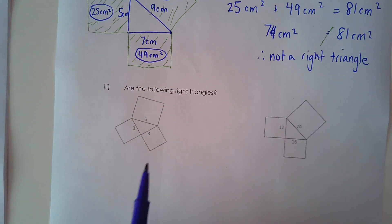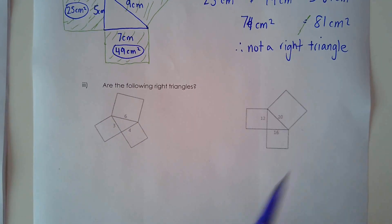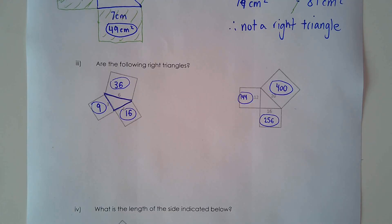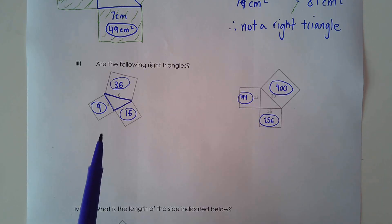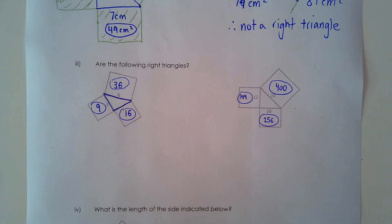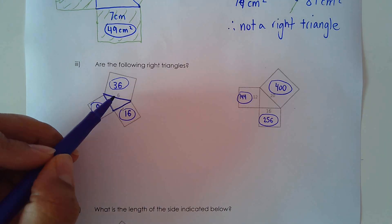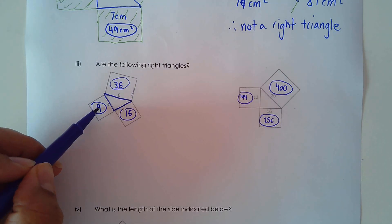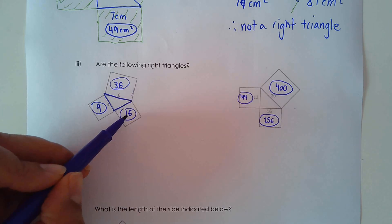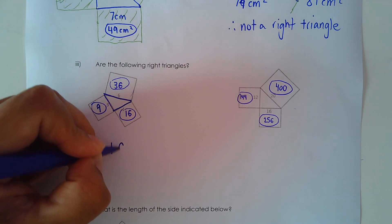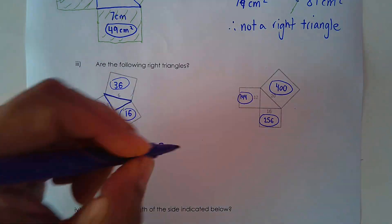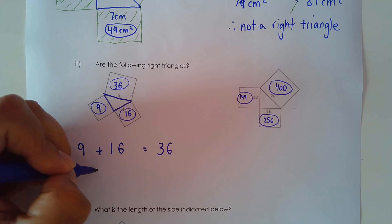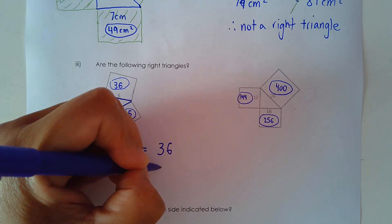I'd like you to try these examples on your own and then check your answers. Are the following right triangles? For the first one, I went ahead and calculated the areas. There are no units given. The largest number is always the hypotenuse. I calculated the other two areas to be 9 and 16. Does 9 plus 16 add up to 36? Well, 9 plus 16 is 25, so it does not equal 36. This is not a right triangle.